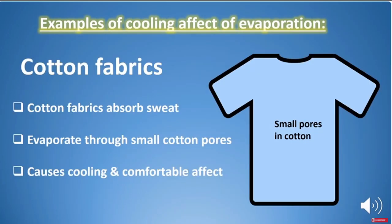Another example: why do we use cotton fabrics? Cotton fabrics absorb sweat and allow it to evaporate through small pores, which lets high kinetic energy molecules escape, producing a cooling and comfortable effect. Similarly, earthenware vessels keep water cool because they have small pores through which high kinetic energy molecules escape, reducing the average kinetic energy and lowering the temperature.